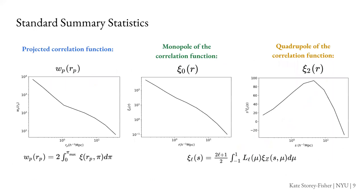Typically how this is done is we take some standard summary statistics — the two-point functions. On the left, we have the projected correlation function w_p(r_p), which is the correlation function as a function of projected radius r_p summed over the line-of-sight direction π, and that's usually what's commonly measured in real data. In the middle, we also measure the monopole of the correlation function — all in redshift space to be sensitive to redshift space distortions. And we also have the quadrupole of the correlation function, which is more poorly measured but also contains important information when combined with the monopole.